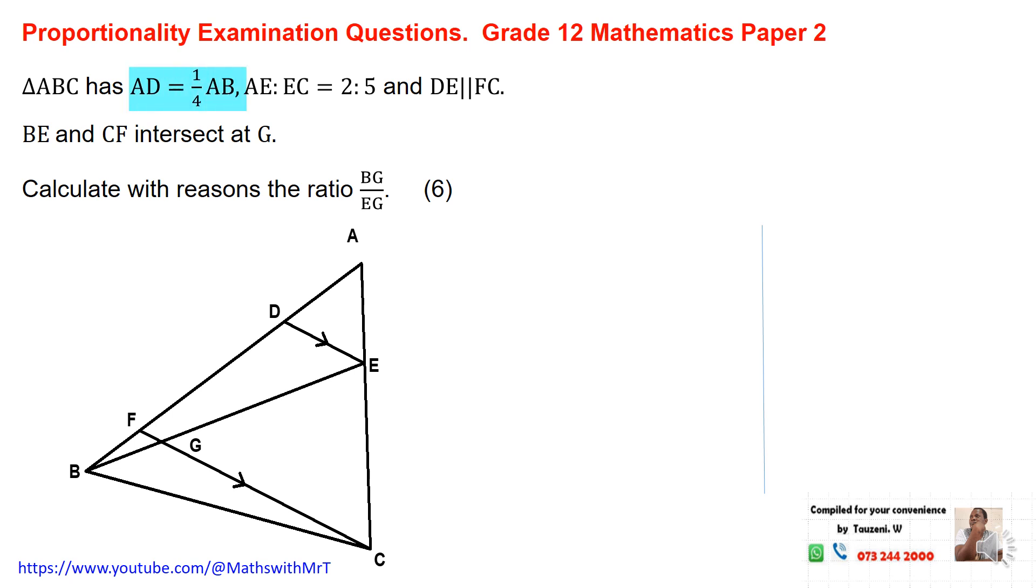First of all, we are told that AB is equal to 1/4, or AD equals to 1/4 times AB. Now, we may want to express this fraction in the normal way that we are used to so that we can be able to see the ratio, how it relates to our diagram.